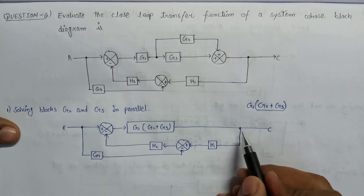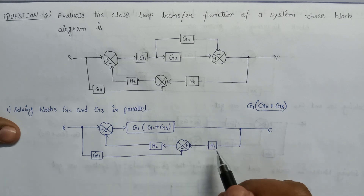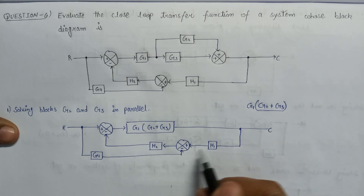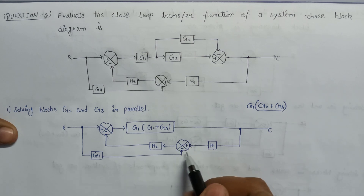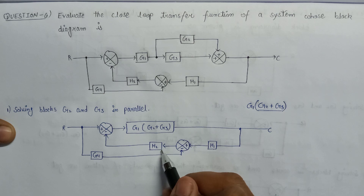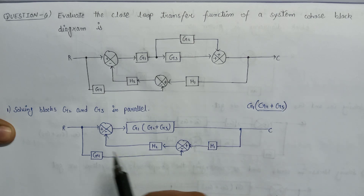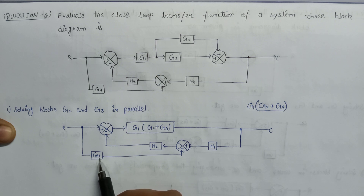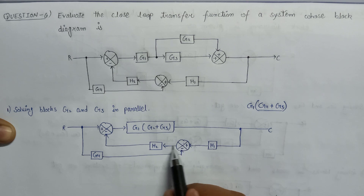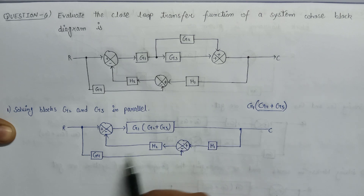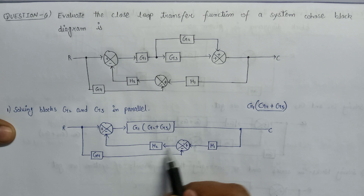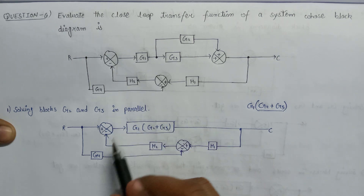Now let's understand what is happening here. There is a feedback gain H1 which is connected in series with H2 by the help of the summing point. We can eliminate this summing point by direct connection since H1 and H2 are in series. Also, in this loop, starting from the takeoff point, the signal goes through gain G4 and then through feedback gain H2. Since G4 and H2 are also connected in series, we can reduce this summing point and reduce the complexity of the block diagram.